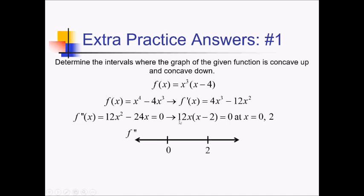I'm going to use this factored version of f double prime to do my sign analysis. Testing something to the left of 0, let's try negative 1. That gives me a negative times a negative, which is a positive. Between 0 and 2, we can use 1. That's going to be a positive times a negative, so negative overall. And after 2, we've got 3. That's going to be a positive times a positive, giving us a positive.